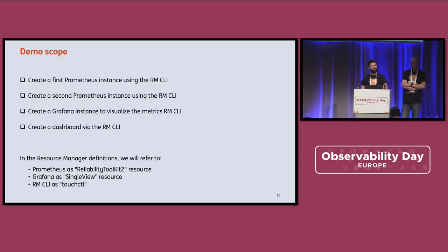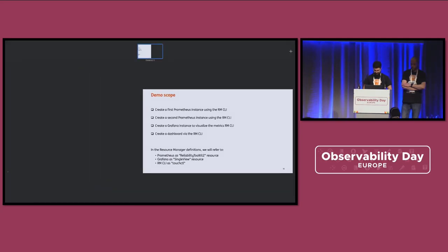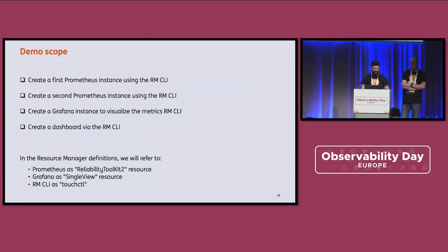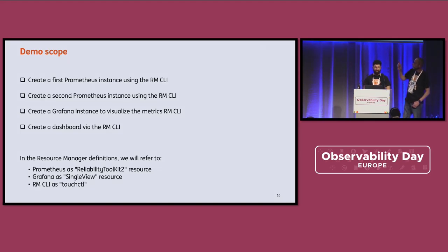To avoid VPN and security issues at the bank, I recorded the demo in advance — but you can trust it hasn't been manufactured. Let's start. This is a Reliability Toolkit 2, so it's a Prometheus resource definition.